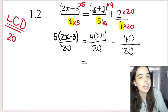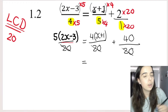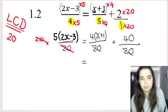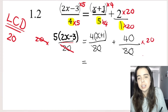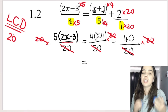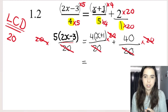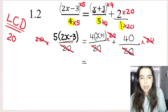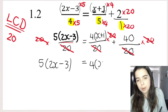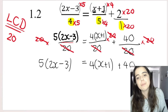Once they're all over the same lowest common denominator, and because I'm solving, I can get rid of the denominators. The reason: the denominator means divide by 20, and the opposite of divide by 20 is times by 20 — the 20s cancel. If I times one side by 20, I have to times all terms by 20. So what I'm left with is 5(2x minus 3) minus 4(x plus 1) plus 40. Now we need to distribute into the brackets.